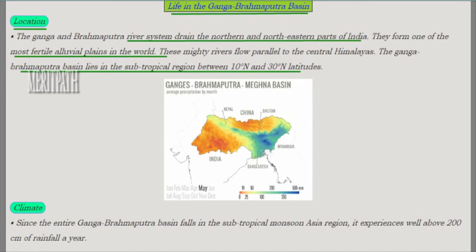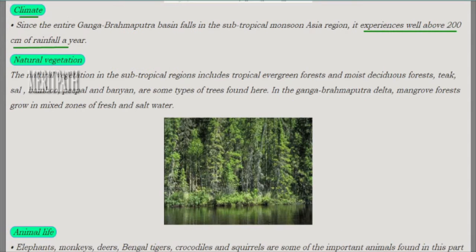The Ganga-Brahmaputra Basin is a river system draining the northern and northeastern part of India. It forms the most fertile alluvial plain in the world. Mighty rivers flow parallel to the central Himalayas. The Ganga-Brahmaputra Basin lies in the subtropical region, between 10 degrees north and 30 degrees north latitudes. In this image we see the Ganga-Brahmaputra Basin.